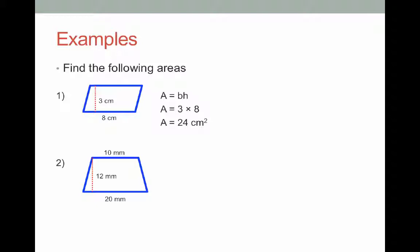For example number 2, we have a trapezium. We have a height of 12 millimeters, and parallel sides of 10 and 20 millimeters. The formula for the area of this trapezium is half the height times A plus B. The height is 12, A and B is 10 and 20, so I'm going to make that substitution.